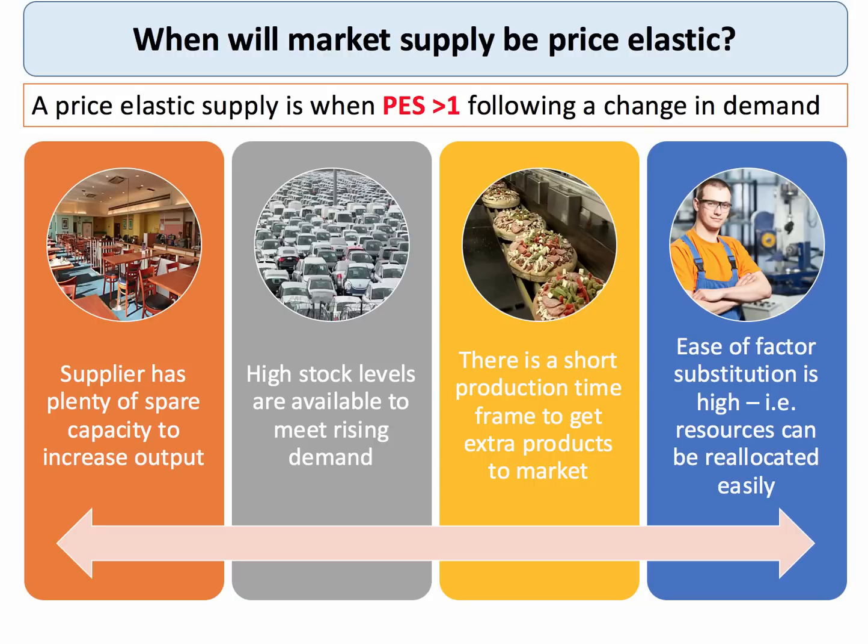Supply is also elastic when firms have a high level of stock that they can bring to market pretty quickly, when the production time frame to get extra products to market is pretty quick — think takeaway pizza — and also when the factors of production can easily be substituted. In other words, you can bring capital into the labour input process, or vice versa.